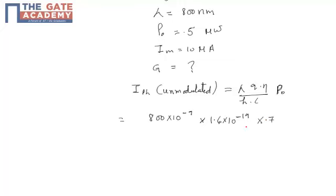Into 70%, so 0.7, upon 6.62, Planck's constant, times 10 to the power minus 34, and velocity of light is 3 times 10 raised to power 8.